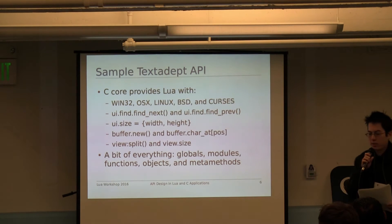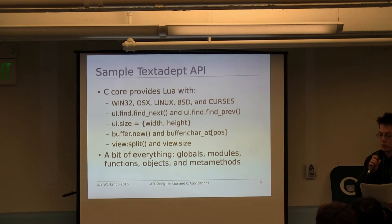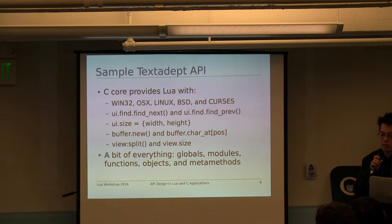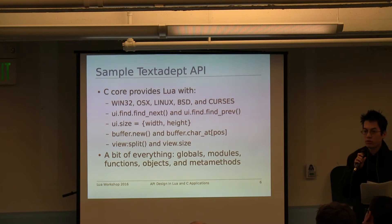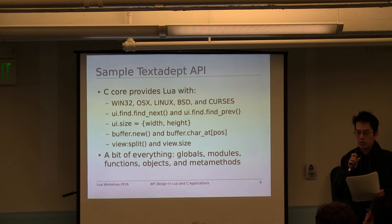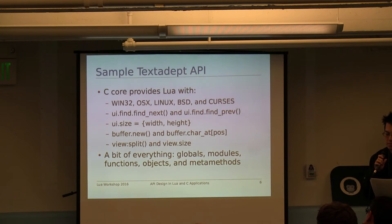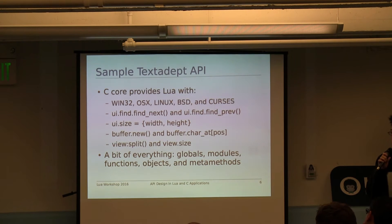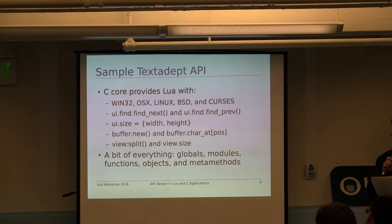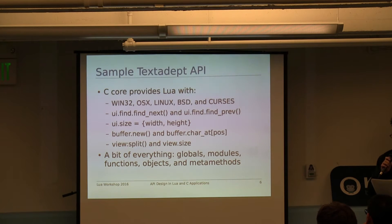This talk is about API design, but up until now I haven't really shown you anything that resembles an API. At this point I can finally show you some concrete examples in a meaningful way. TextAdept's core C code inserts a lot of custom objects, functions, and features into its Lua environment. Users use this interface to interact with the editor in a very deep way.